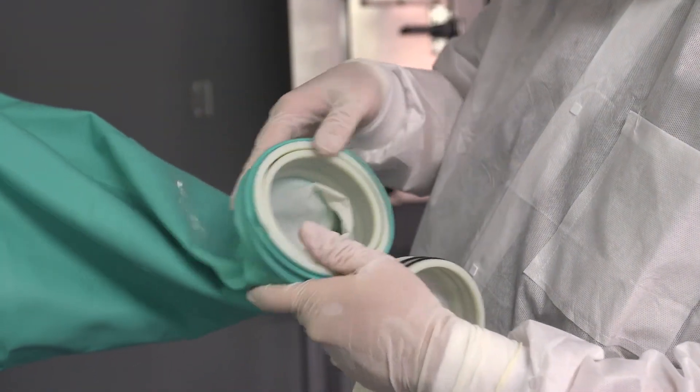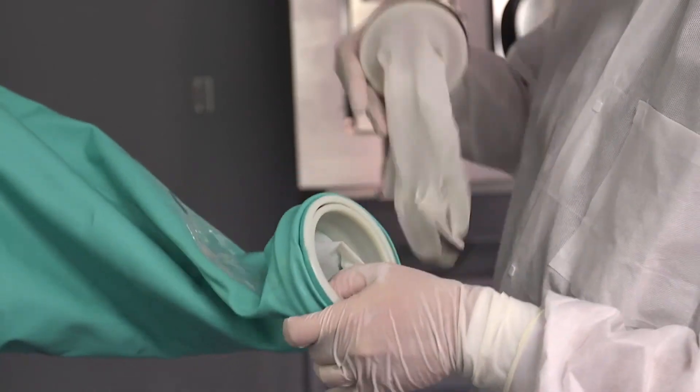The glove end goes first. Fold the glove and push it inside the beta ring.